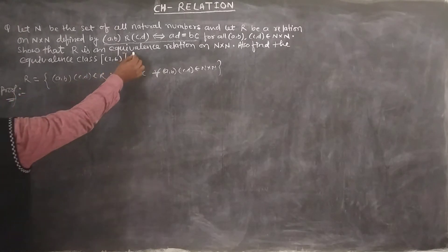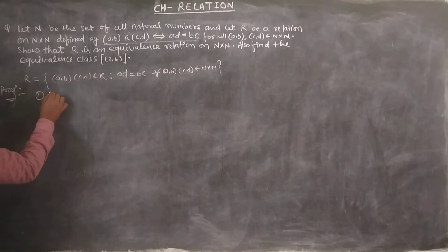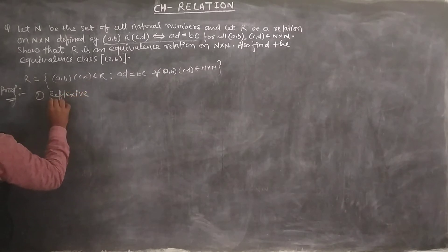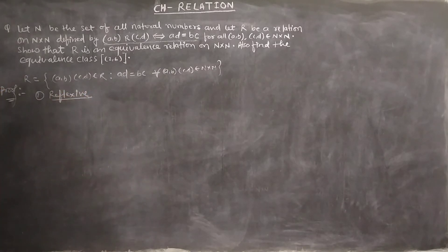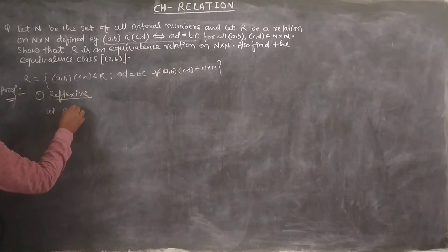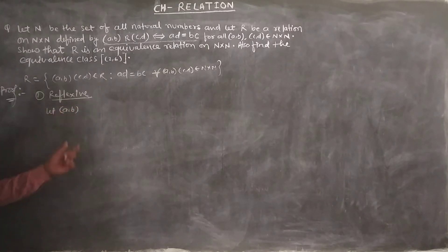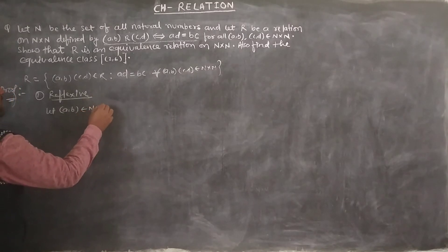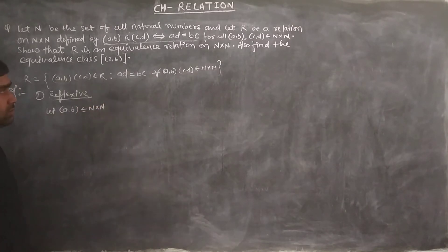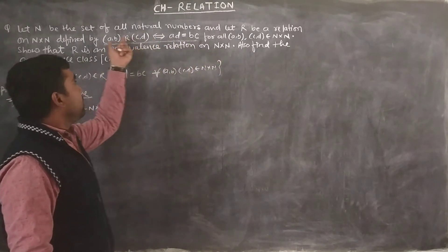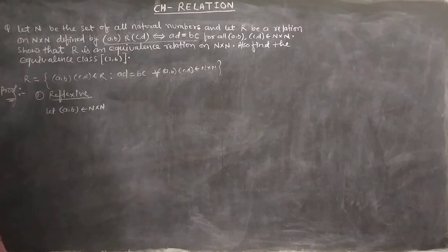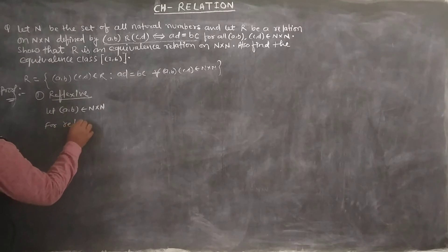First, we check reflexive. For reflexive, let (a,b) be any arbitrary element which belongs to the Cartesian product N×N. We need to show that (a,b) is related to (a,b), meaning (a,b) belongs to R.